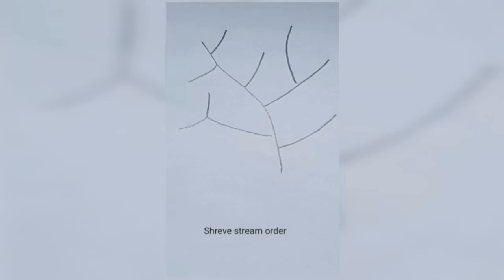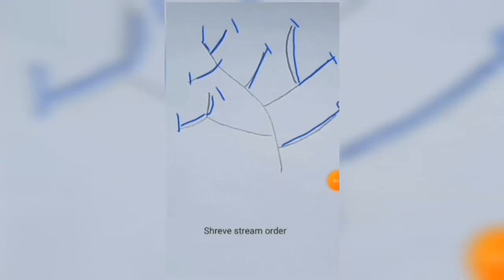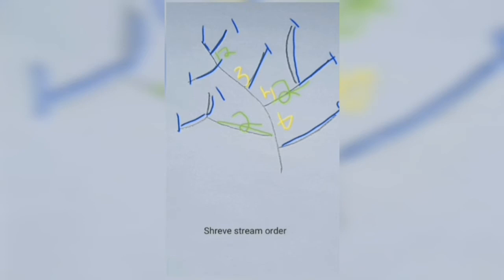In the Shreve method, you first start off labeling all your first-order tributaries, then you carry on. One plus one is equal to two, one plus one is equal to two, and one plus one is equal to two. In the Shreve stream order you add them: so two plus one is equal to three, three plus one is equal to four, four plus two is equal to six, six plus two is equal to eight, and eight plus one is equal to nine.